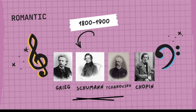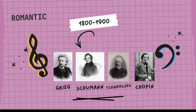Other notable composers of the Romantic era include Robert Schumann, Peter Ilyich Tchaikovsky, who composed the music for The Nutcracker, and Frédéric-François Chopin, who you may know from this piece.